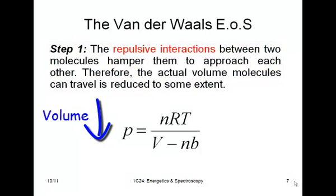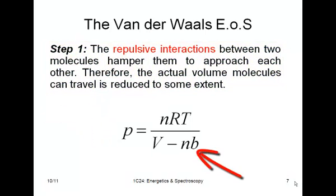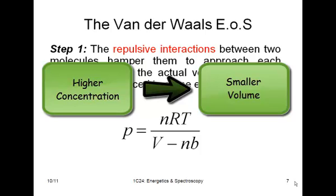So what we do is we put a term in here that takes something off the overall volume, where B is an experimentally determined coefficient that's different for different gases, and n is the number of moles. The reason that n is in there is because obviously the more number of molecules that are around, the more volume you have to take off.